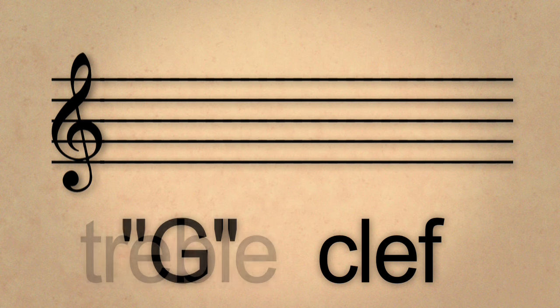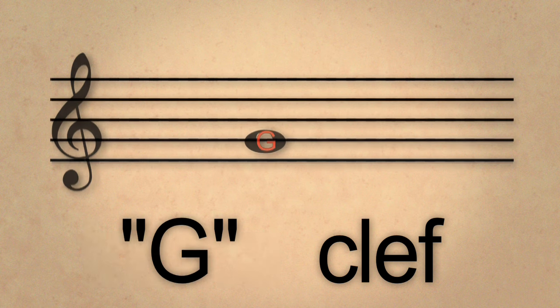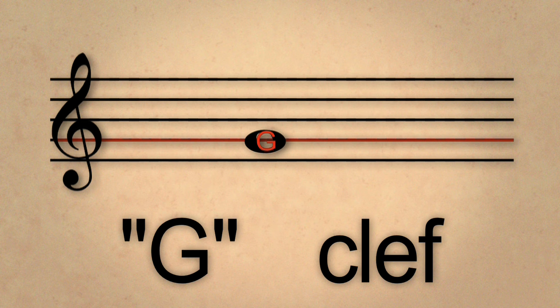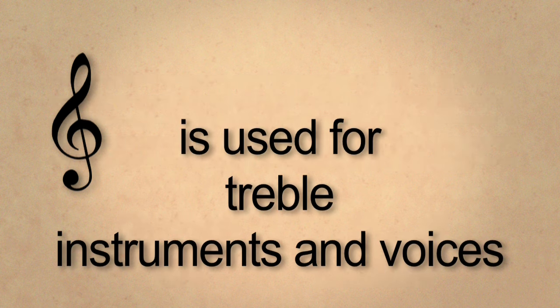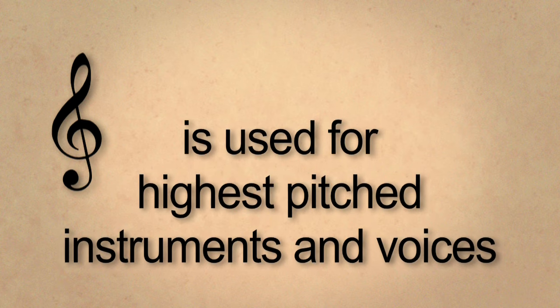The treble clef is sometimes called a G clef because it circles the G on the second line. This clef is used for treble instruments and voices, or the highest pitched instruments and voices.